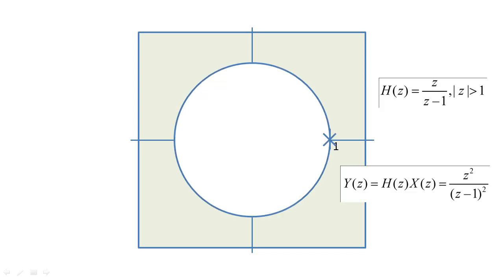To finish this lecture, let's discuss what happens if we have a causal system with a pole on the unit circle. With this system, the impulse response function will equal the unit step.